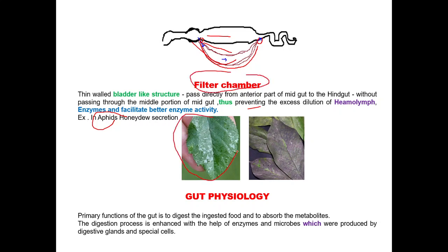In aphids, leafhoppers, and plant bugs, the excessively taken plant sap is excreted out through the anus by means of the filter chamber as honeydew over the leaves. This honeydew attracts sooty mold fungus, as a result the leaves turn black in color. Due to blackening of leaves, photosynthetic activity is hampered in the plant, which ultimately influences the yield or plant productivity.